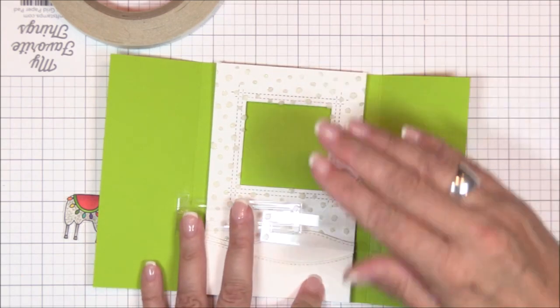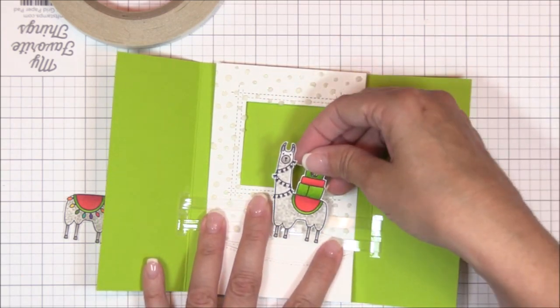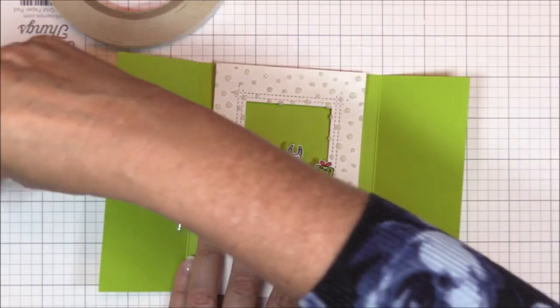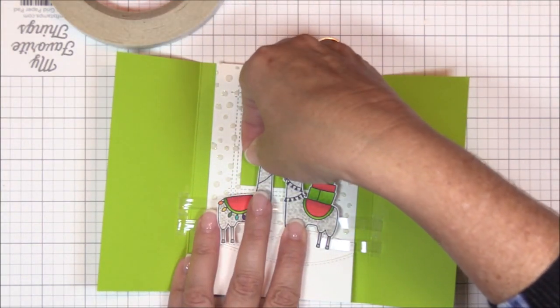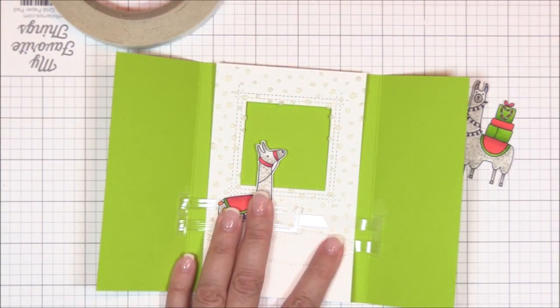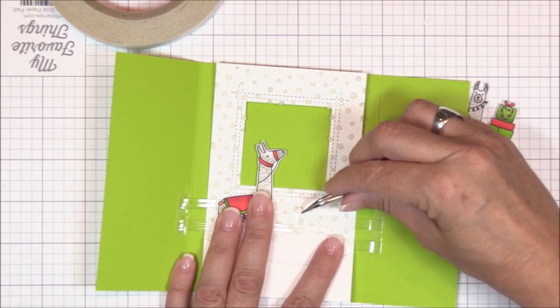I slid that interior panel back behind the mechanism to help me decide where I want my llamas to be adhered to the tabs. And again, the character on the right is controlled by the left tab and the character on the left is controlled by the right tab.